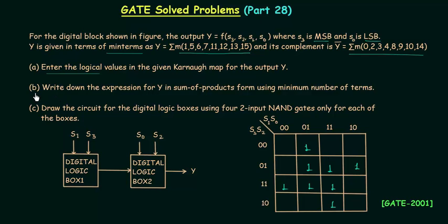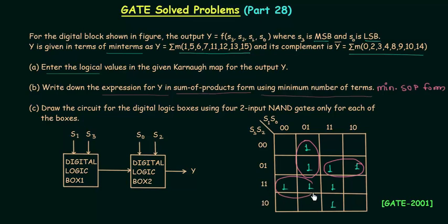In the second part of the problem, we need to write down the expression for Y in sum of products form using the minimum number of terms. This means we need to calculate the minimal SOP form. For this, I will make groups of ones in this KMAP. In the first group I will have two ones, in the second group two ones, in the third group two ones, and in the fourth group the remaining two ones. I will call these groups P1, P2, P3, and P4.